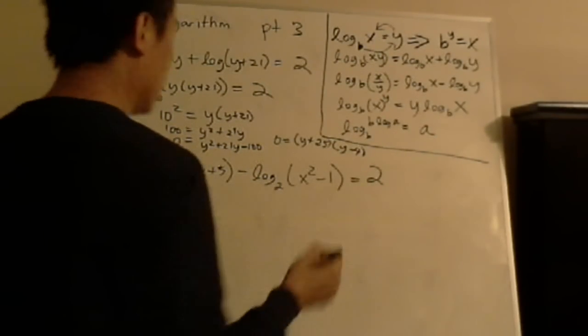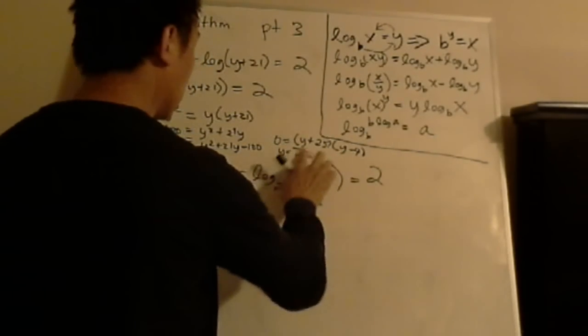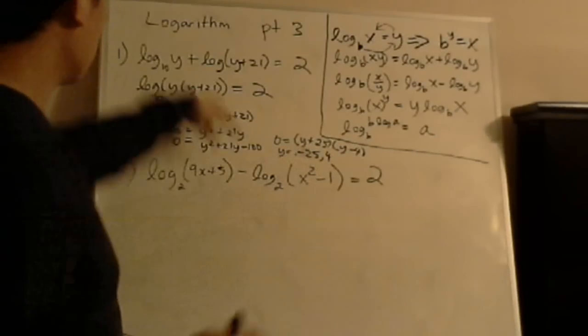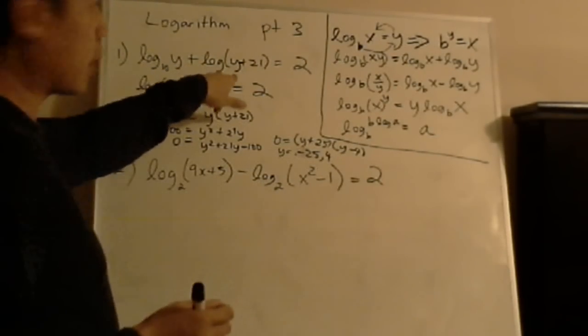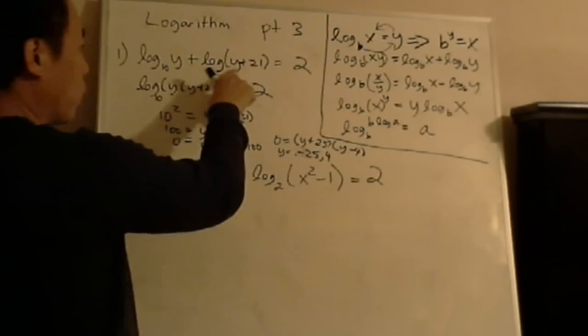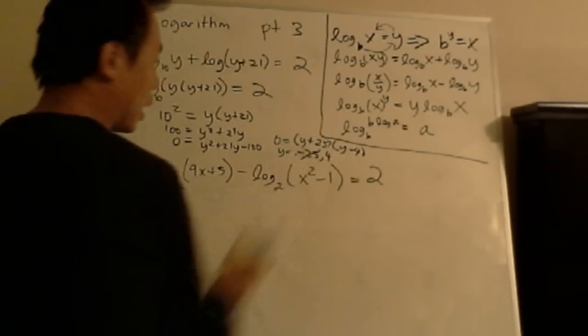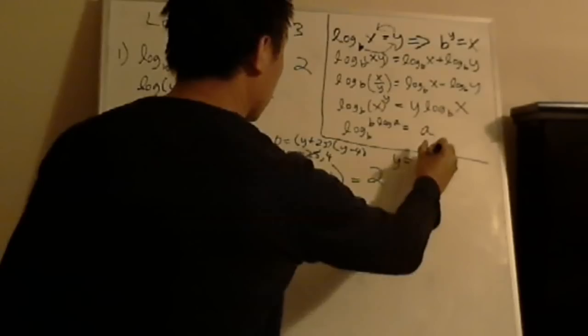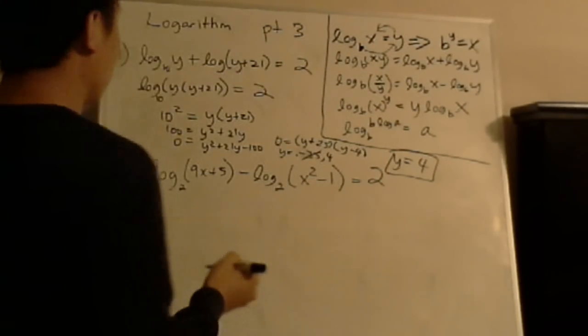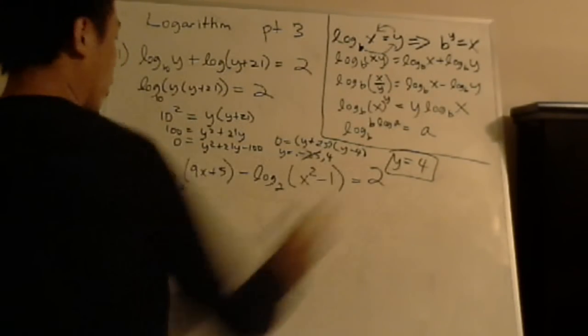So the solutions will be y is negative 25 and 4. And then we plug it back to the original equation. Remember, you can only have positive logs, logarithms. If you put negative 25 in here, you get negative 4, right? Negative 25 plus 21 is negative 4. So that's why negative 25 cannot be, so 4 is the only possibility. You plug back 4 and it works. 4 plus 21, 25, log 4. That's positive. You can't take a log of a negative number. So the answer is y equals 4.